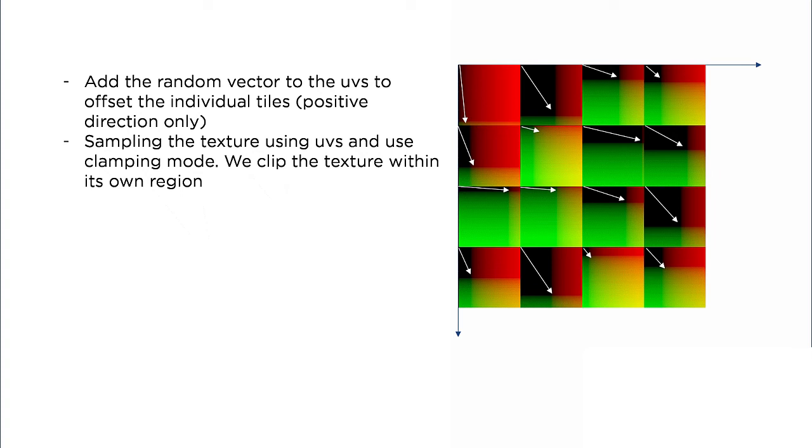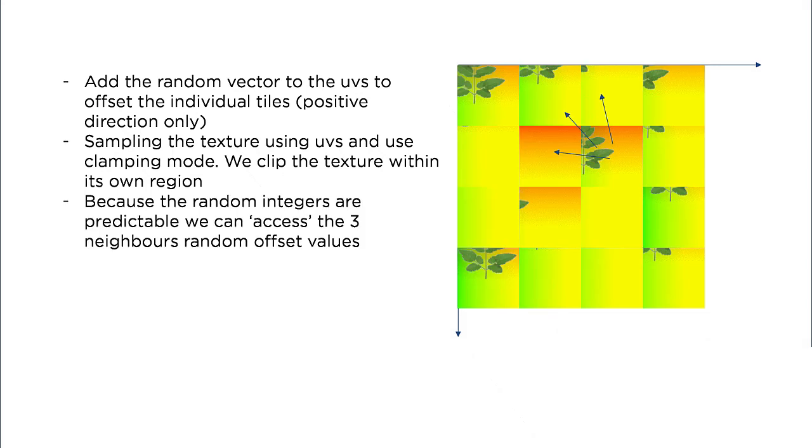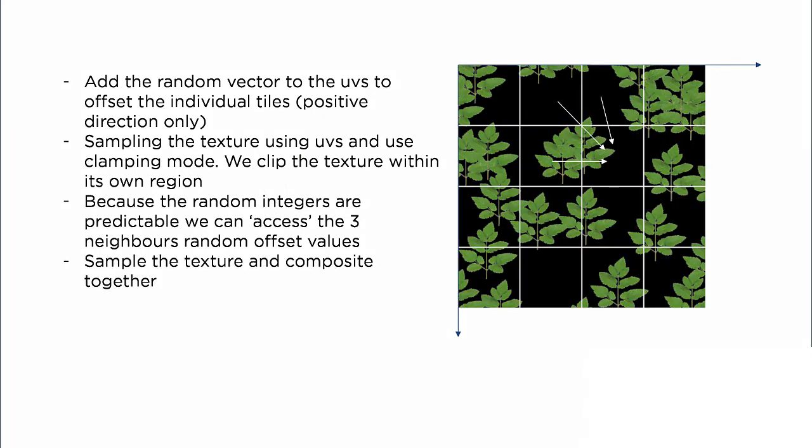then the texture is never offset more than one UV tile's distance, and it will never go over more than one tile away. The reason that is important is because we can then sample each neighbor in the negative direction and use that tile's integer value to get the random offsets for that tile. This means we can find out how the neighbor tiles push their texture into the current tile.